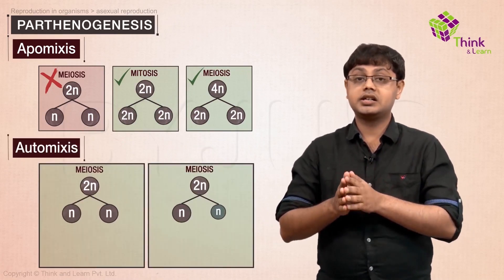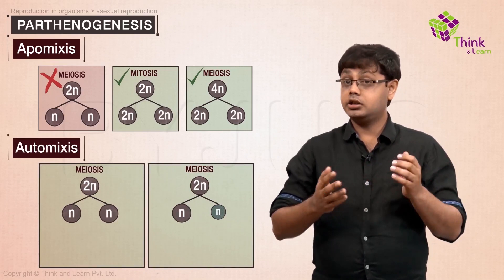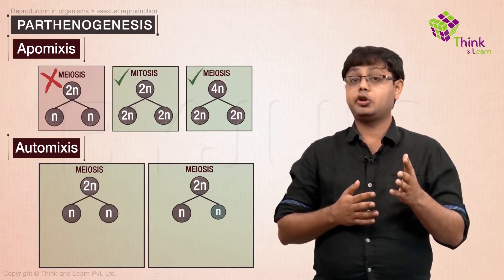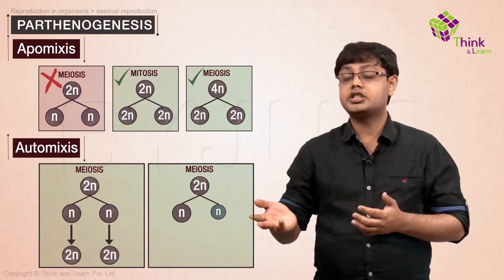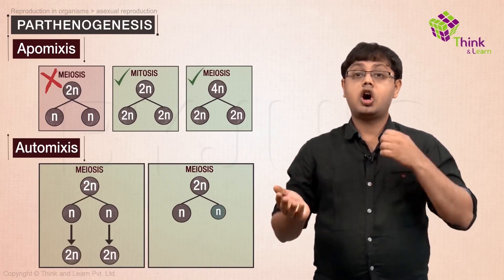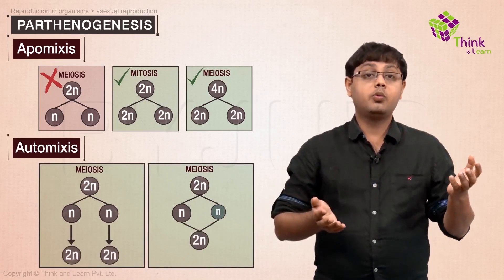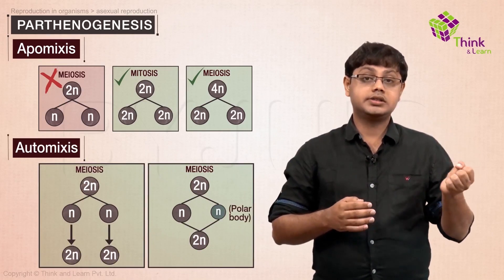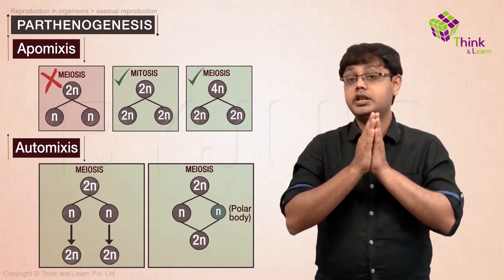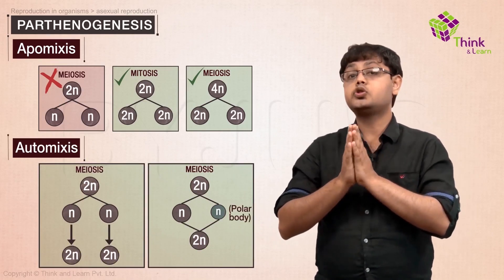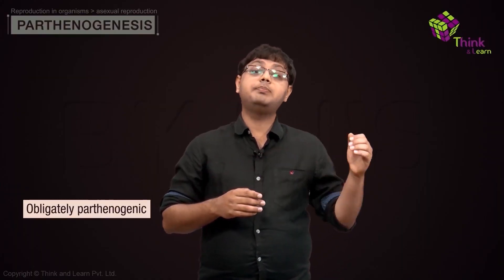The most common way to maintain diploid levels is automixis. This is when meiosis occurs and the resultant haploid oocyte either duplicates its genome or fusion with one of the polar bodies occurs. This way obviously does not produce clones.